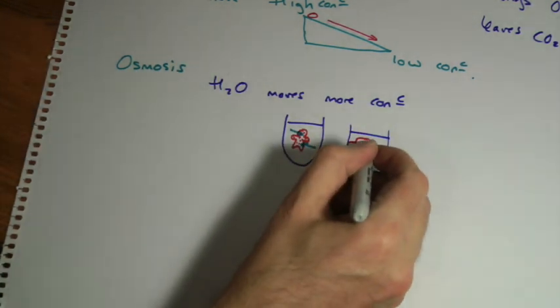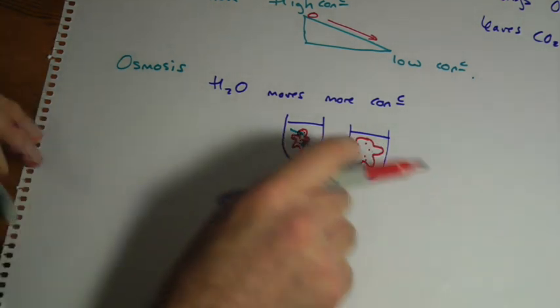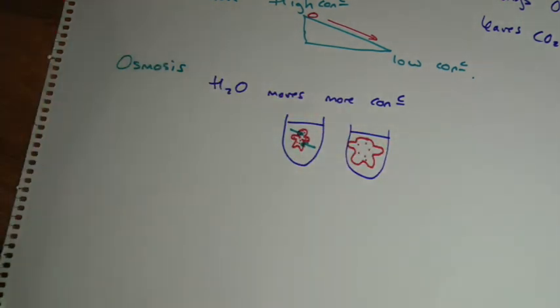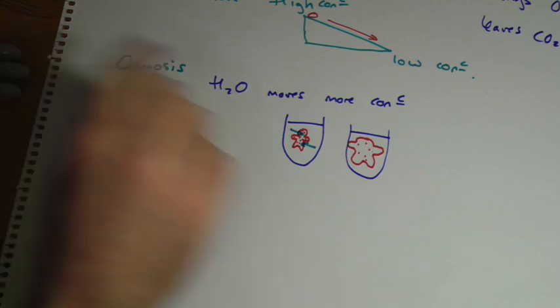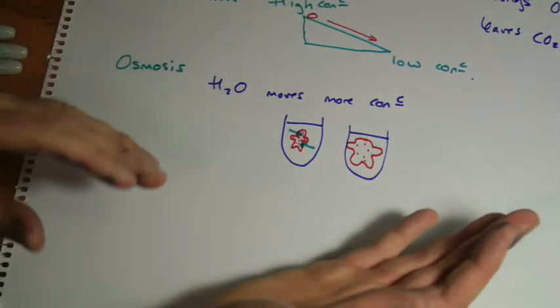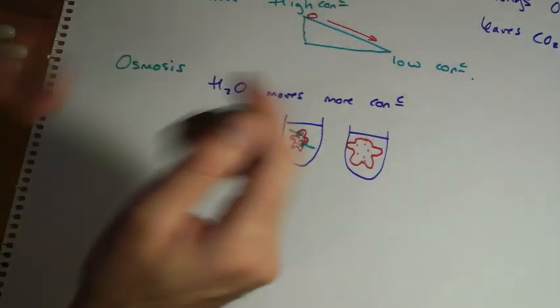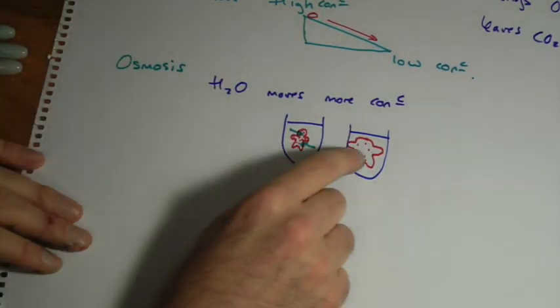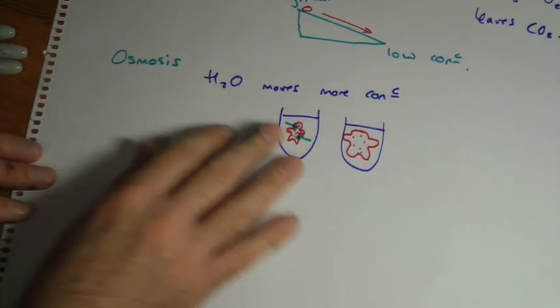And that's what your cells will do in pure water. They will swell. Water will move in and they swell up. Of course they've got a mechanism to stop them swelling too much, they kind of pump stuff out. If you're a plant cell, you've got a cell wall. If you're a fungi or a bacteria cell, you've got a cell wall, and that prevents your bursting. But that's what happens. Water moves into where it's most concentrated.